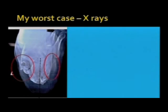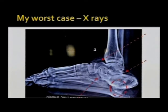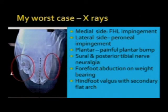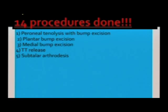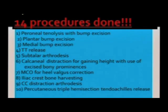This case had FHL impingement on the medial side, peroneal impingement on the lateral side, a painful plantar bump, sural and posterior tibial nerve neurological pain, forefoot abduction on weight bearing, hindfoot valgus with secondary flat arch, arthritis of the subtalar and calcaneo-cuboid joints, and tendo-Achilles tightness. The 14 procedures performed were: peroneal tenolysis with excision of lateral bump, plantar bump excision, medial bump excision, tarsal tunnel release, subtalar fusion, calcaneo-cuboid distraction fusion, medializing calcaneal osteotomy for heel valgus correction, iliac crest bone grafting, percutaneous triple hemi-section, tendo-Achilles release, and all four lateral claw toe releases.